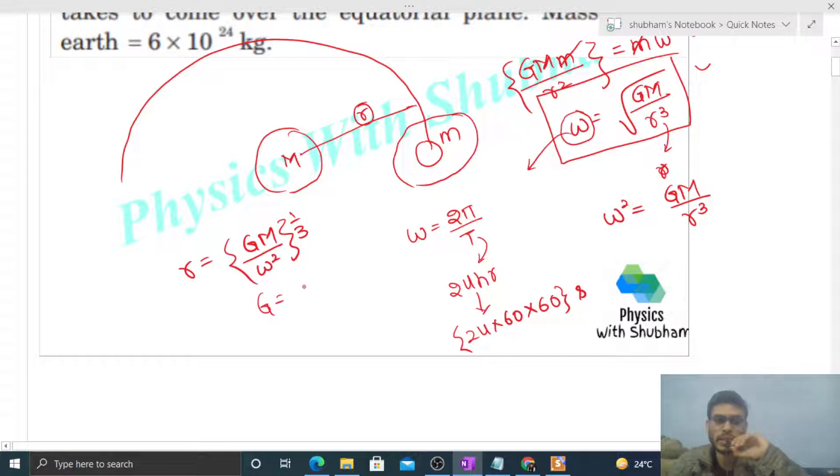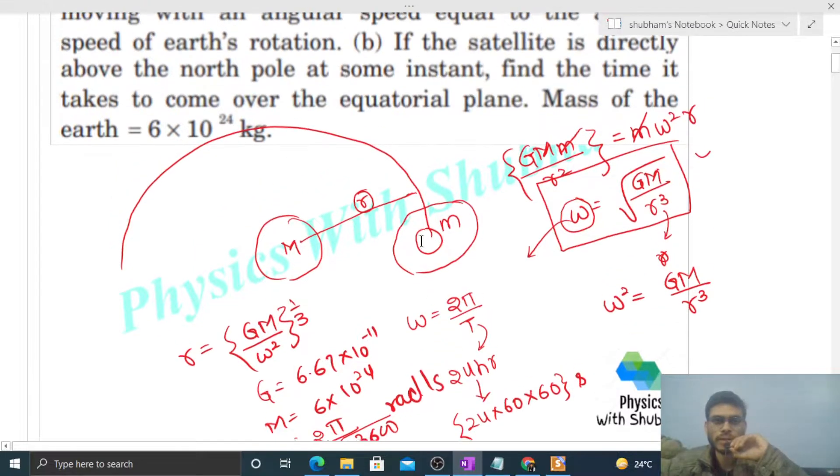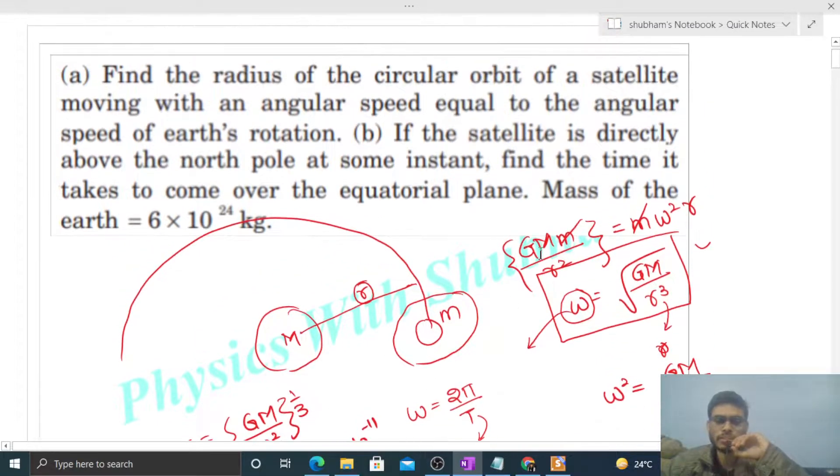So you can put the values: capital G will be 6.67 times 10 to the power minus 11, capital M will be 6 times 10 to the power 24, omega will be 2π divided by 24 times 3600, that is in radians per second. The calculation remains, you can do it yourself.